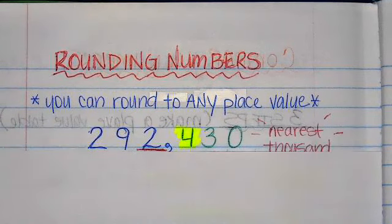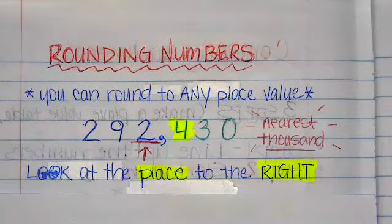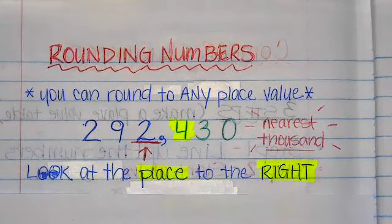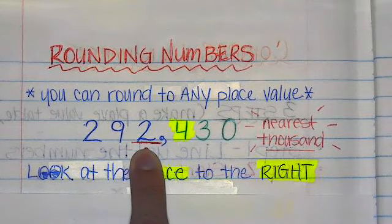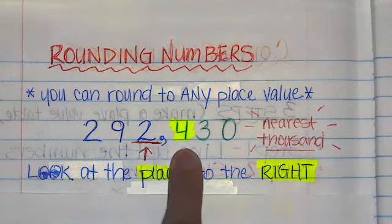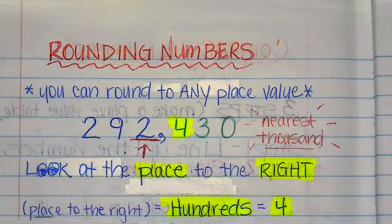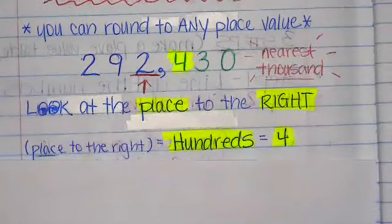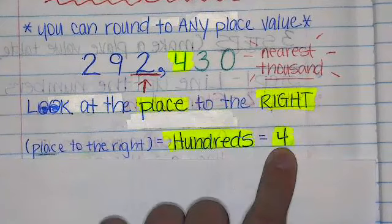We're going to take the number 292,430 and round it to the nearest thousand. Since we're rounding to the nearest thousand, you have to find the thousands place. Once you find the thousands place, you're going to look at the place to the right — that is your bossy number.